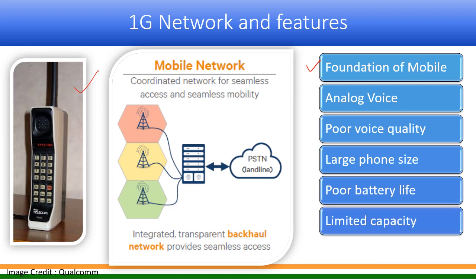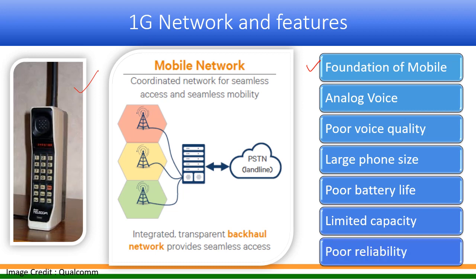The features of 1G: it was the foundation for mobile communication. The voice was analog, so voice quality was poor. The phone size was bigger and battery life was poor. Capacity was limited because each 30 kHz channel could only be used by one user. Reliability was also poor because of the analog techniques being used.